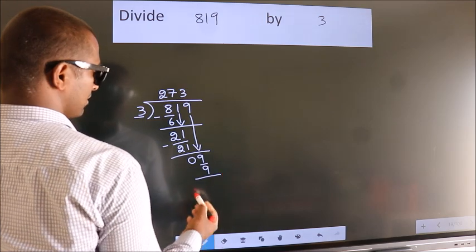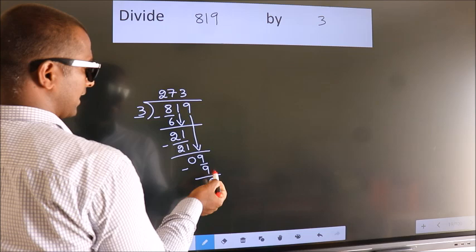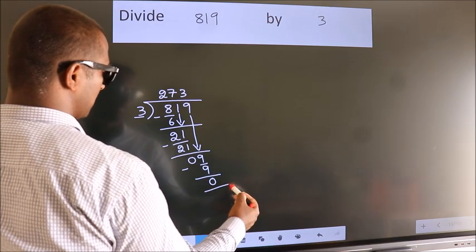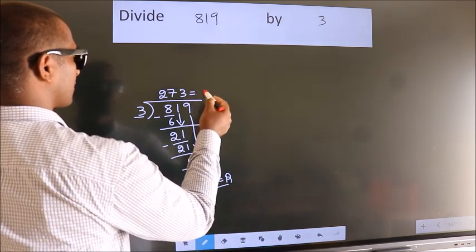Now we subtract. We get 0. No more numbers to bring down. So we stop here. This is our remainder. This is our quotient.